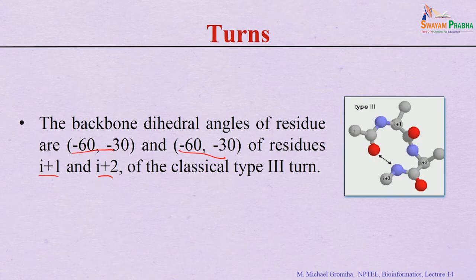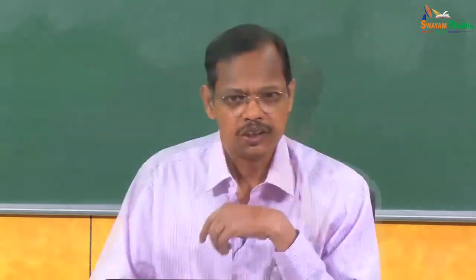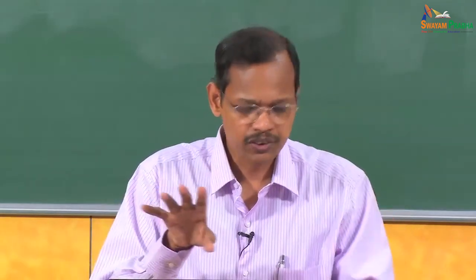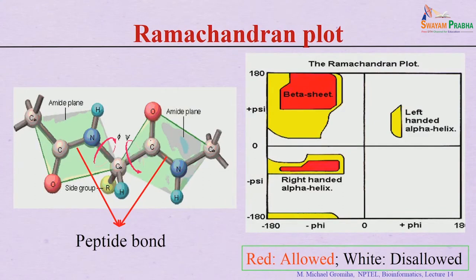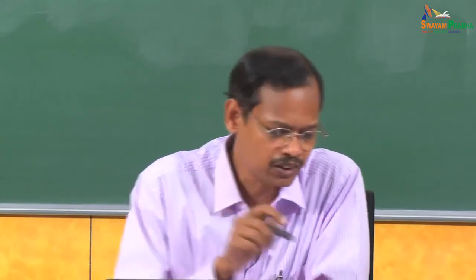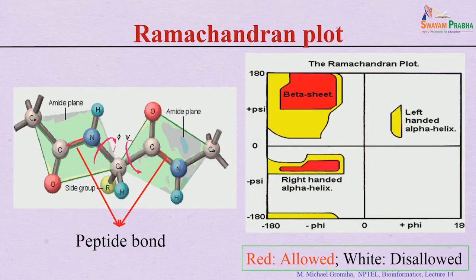All secondary structures — alpha helix, beta strand, and turns — are formed by hydrogen bonds between NH and CO residues in the main chain. The main chain runs as N–Cα–C–N–Cα–C. Rotations at different positions are either allowed or not allowed. The peptide bond (C–N) has partial double bond character, making it a strong bond where rotation is not possible.